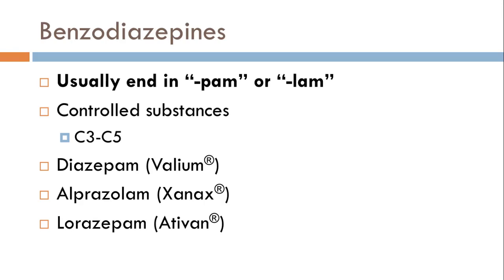Benzodiazepines end in PAM or LAM and are controlled substances — schedule 3, 4, and 5. Three examples are diazepam, alprazolam, and lorazepam, with brand names Valium, Xanax, and Ativan respectively. You can see those right here on the slide.